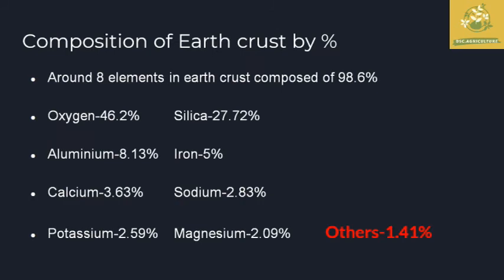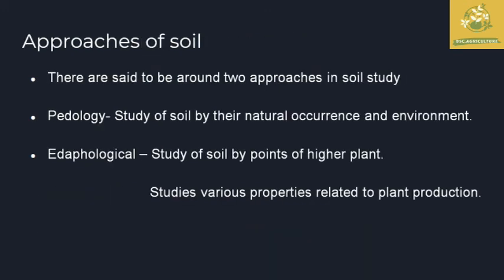Regarding the composition of the earth's crust by percentage, only around 8 elements in the earth's crust comprise around 98.6 percent of the total earth crust. The first is oxygen at 46.2 percent, followed by silica at 27.72 percent, then aluminium, iron, calcium, sodium, potassium, and magnesium. These eight elements compose 98.6 percent of the earth's crust, and other nutrients make up the remaining 1.41 percent.